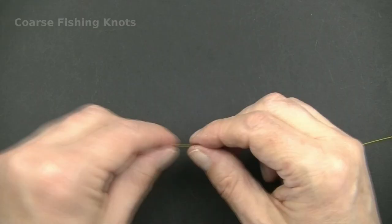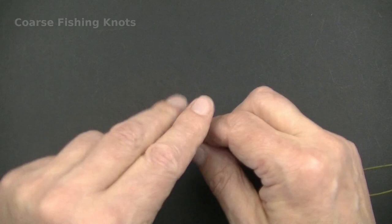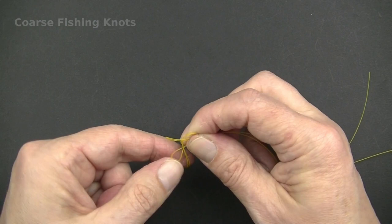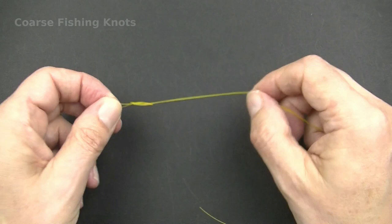Tie a figure of eight loop knot in the end of the main line. Make sure to leave a long tag end to the knot. Wet all knots with water or saliva before tightening them down.